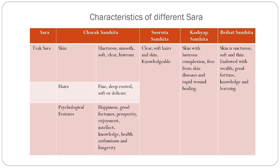In Brihat Samhita, the view of all Acharyas is incorporated: the skin is unctuous, soft, and thin, endowed with wealth, good fortune, knowledge, and learning. Sharp demarcating features have been mentioned between the different Saras. In Tvak Sara, the skin is lustrous, smooth, and unctuous. Now we proceed to Rakta Sara.